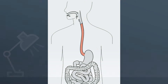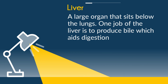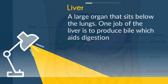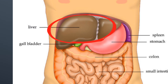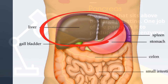Next we have the Liver, a large organ that sits below the lungs. One job of the liver is to produce bile, which aids in digestion. And here's a picture of the liver and its location.